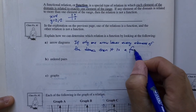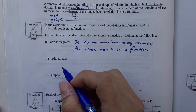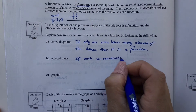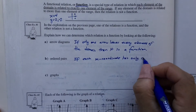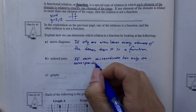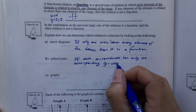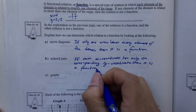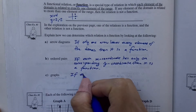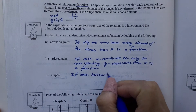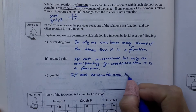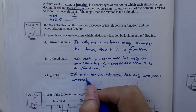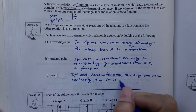To summarize: for the arrow diagram — if only one arrow leaves every element of the domain, it is a function. For ordered pairs — if each x-coordinate has only one corresponding y-coordinate, it is a function. For the graph — if each vertical position on the horizontal axis has only one point vertically, it is a function.